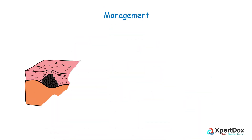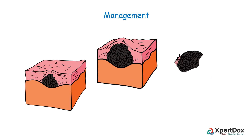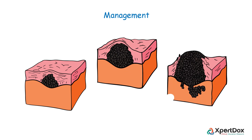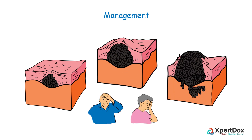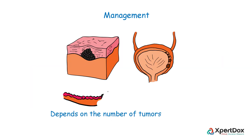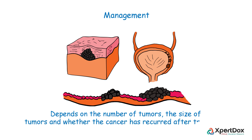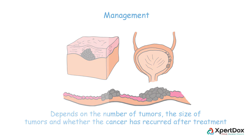The chance of recovery depends on the stage of the cancer, the type of bladder cancer cells, and the patient's age and general health. If the bladder cancer is superficial, prognosis also depends on the number of tumors, the size of tumors, and whether the cancer has recurred after treatment.